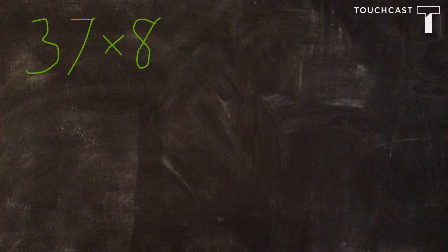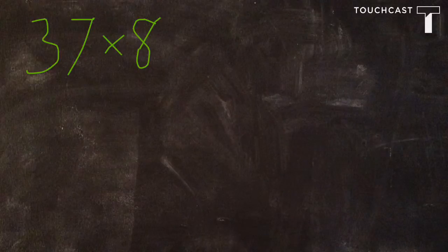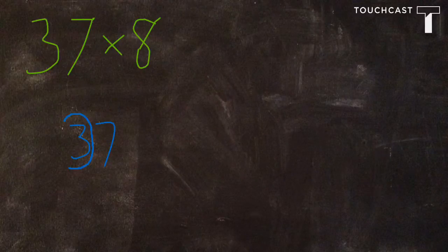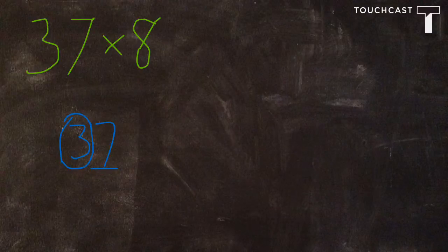So to find the estimate, we need to round 37. We're going to round it to the nearest 10, and that 7 tells us how we are going to round.